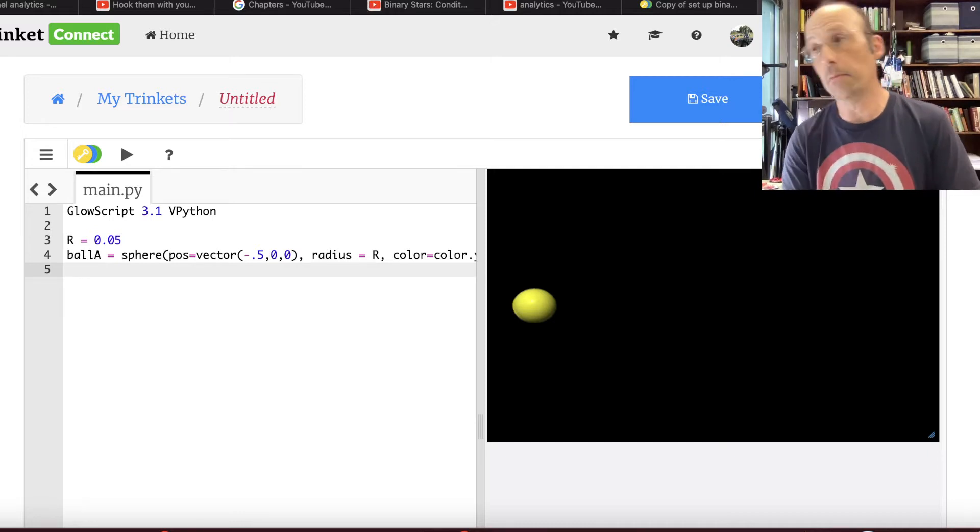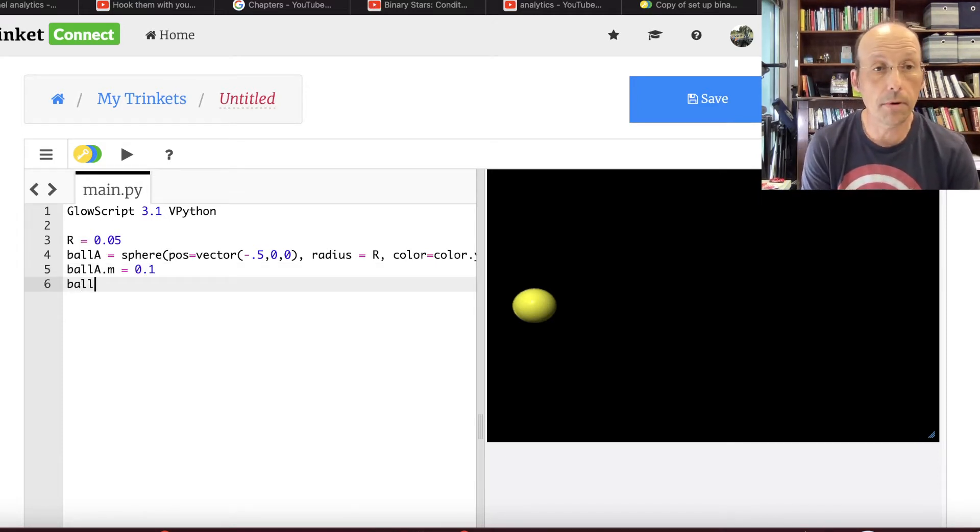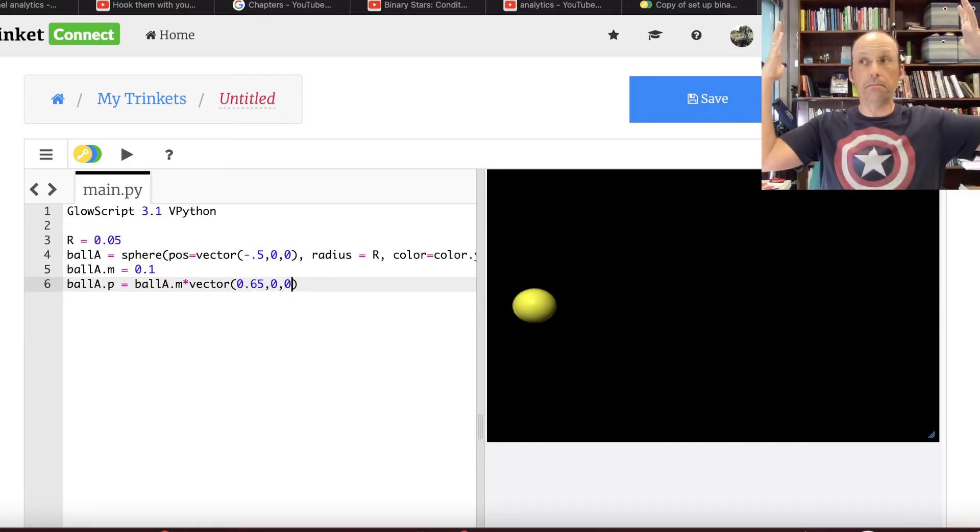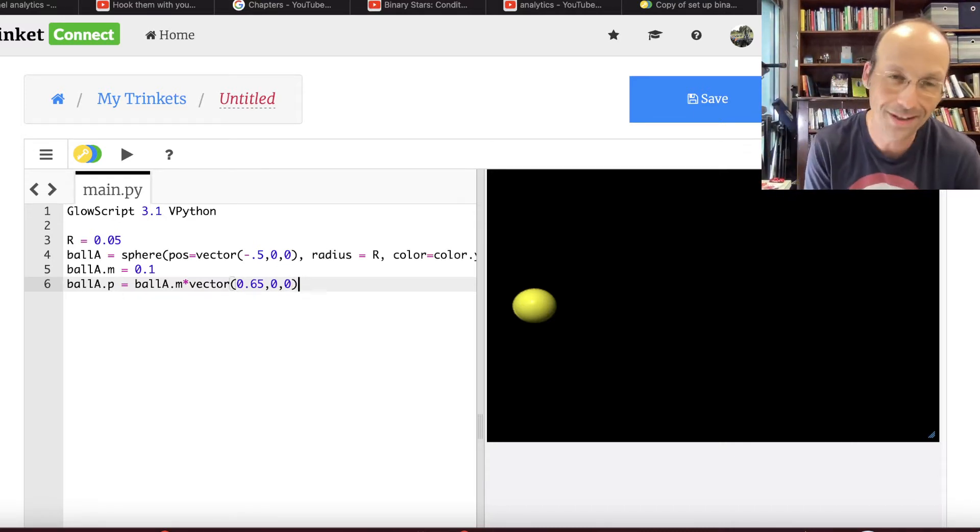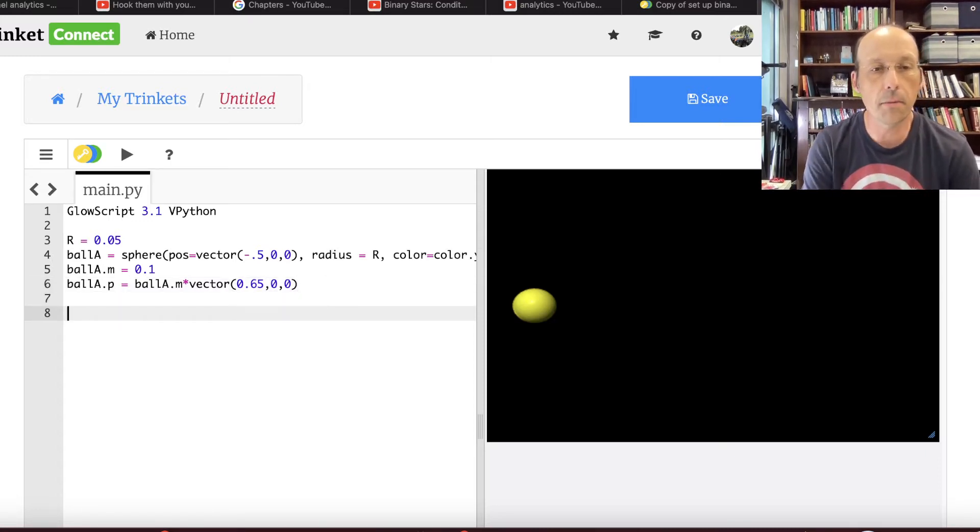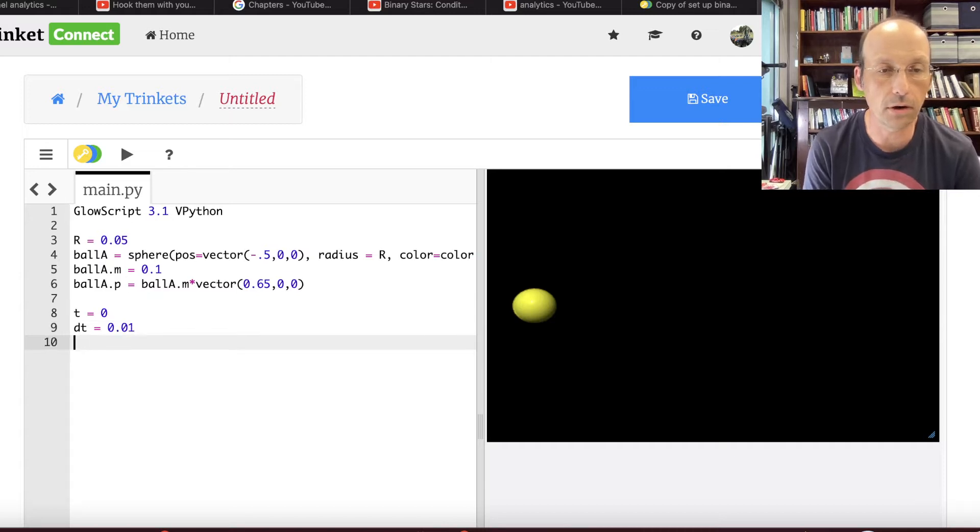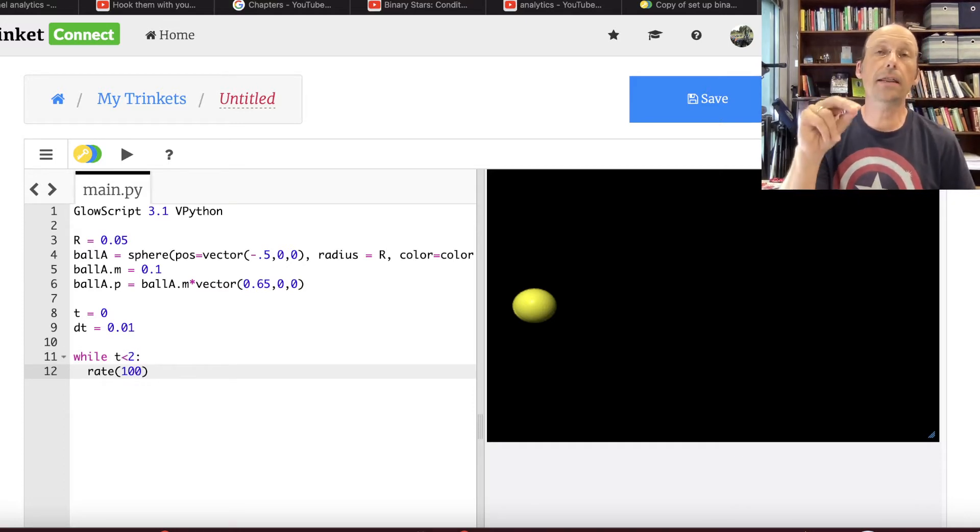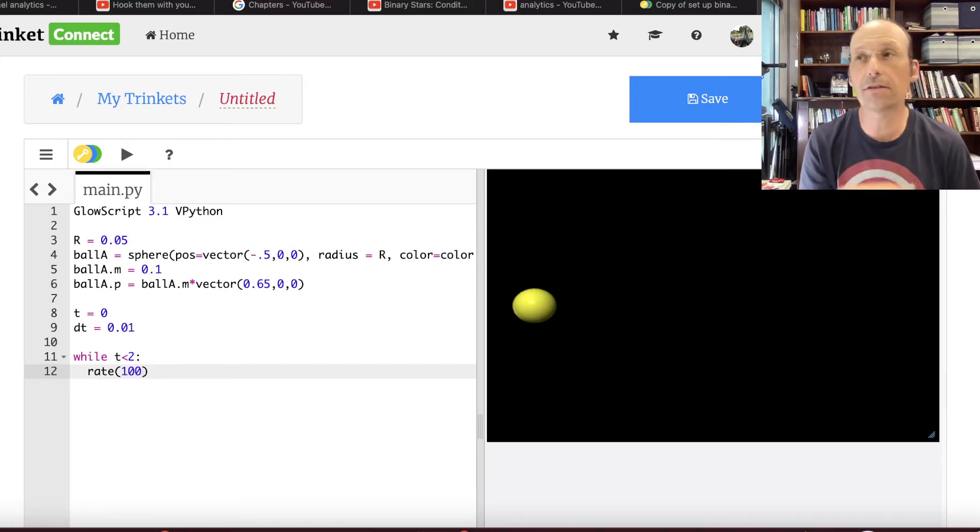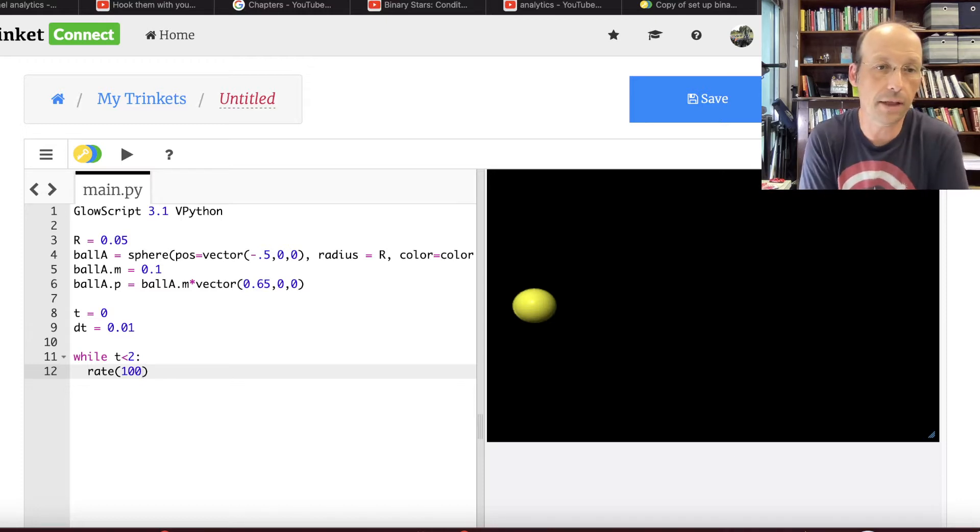So now if we run this, so there's my ball. It moved over to the side and moved it smaller because it's not at the origin. So that's good. Now I need to give it a mass and a velocity and a momentum. So I'm going to say ball A.m is, it's a 100-gram mass, so 0.1. Now I need the momentum, ball A.p equals ball A.m times a vector. How fast is it going? Let's say it's going 0.65 meters per second. So 0.65. See, I just made that up. I didn't, I just, out of the top of my head I came up with a number. It's actually not easy to do. You get stuck. You're like, I can't think of a number. Okay, so that's the momentum, the mass, and I need a time interval. T equals 0, DT equals 0.01. Okay, now I just want to move the ball across the screen. So I can say while T is less than 2, rate 100.